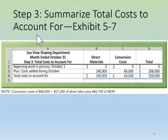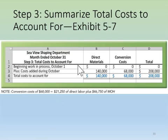Step three is to summarize the total costs to be accounted for — the production costs associated with beginning inventory, if any, plus the production costs incurred during the month. We show separate totals for direct materials and conversion costs. Because the department had no beginning inventory of partial units, the beginning work in process balance is zero, so we work with only the costs added during the month.